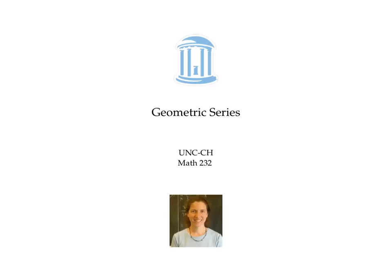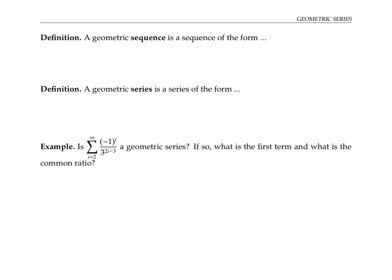This video is about geometric series, and when they converge, and when they diverge. A geometric sequence is a sequence of the form a, a times r, a times r squared, a times r cubed, and so on, for some numbers a and r. This can be written in the compact notation a times r to the k, where k goes from zero to infinity.